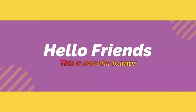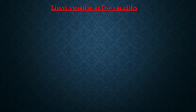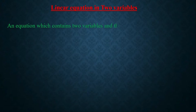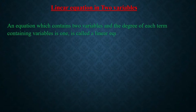Hello friends, today we are going to learn linear equations in two variables. First of all, we will see what is the definition of this equation. An equation which contains two variables and the degree of each term containing a variable is 1 is called a linear equation in two variables.